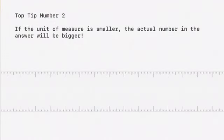Top tip number two. If the unit of measure is smaller, the actual number in the answer will be bigger. So when you convert centimetres to millimetres, the answer is bigger because there are 10 millimetres for every centimetre. So the answer is 10 times more.